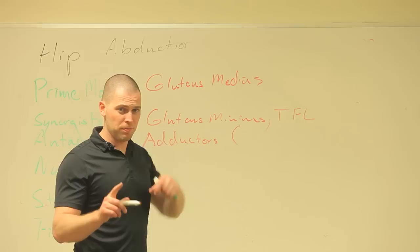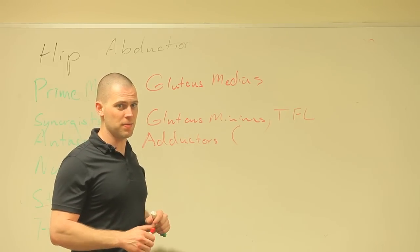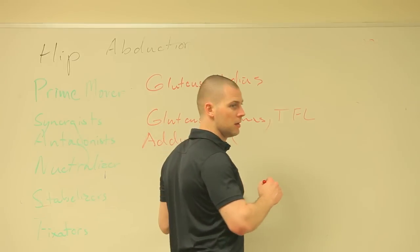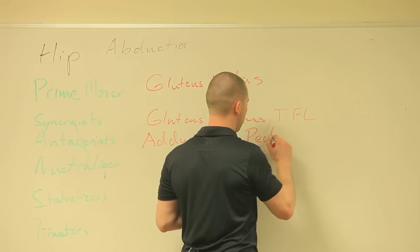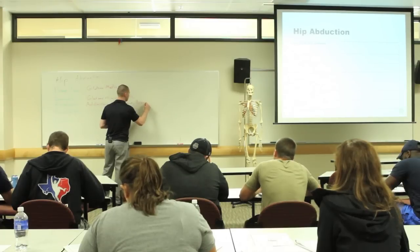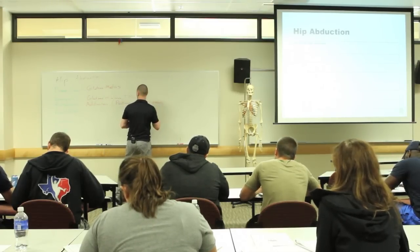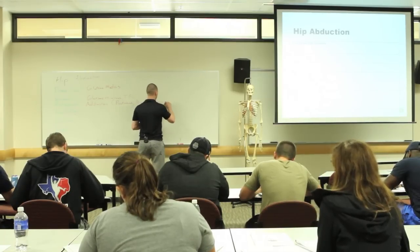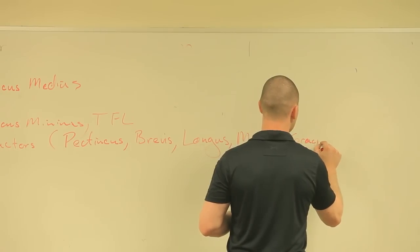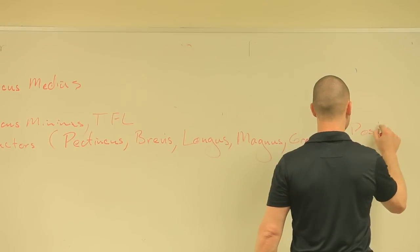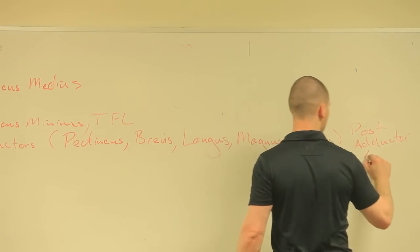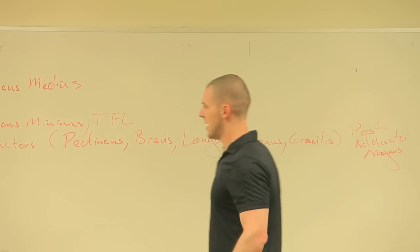Since this is the last one, peanut butter leaves me greasy — this is the last time we're going to write the adductors on the board. Let's break them out: pectineus, brevis, longus, magnus, gracilis — and then we can put posterior adductor magnus, since for most of the weekend we've been considering peanut butter leaves me greasy as the anterior adductors and the posterior head of adductor magnus separately.